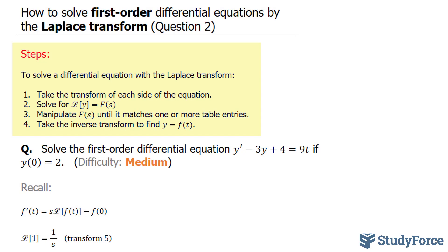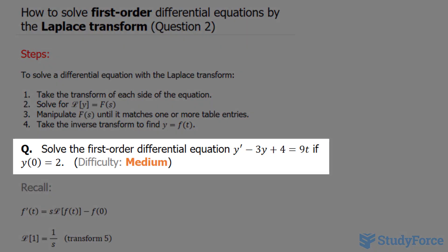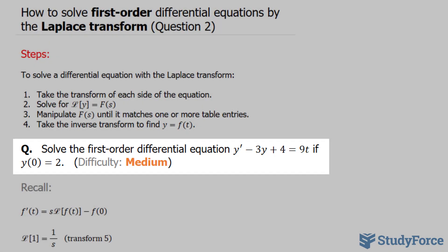Just like in question number one, we'll be following these four steps to tackle our question, which reads: solve the first-order differential equation y' − 3y + 4 = 9t if y(0) = 2.